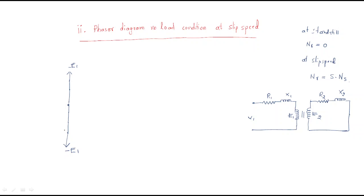We take E2 with a smaller magnitude. In phasor diagrams, the generated EMF and flux always have a 90-degree phase relationship. The flux direction is shown, and the magnetizing current Imu is always in phase with the flux. The core loss component Ic is also generated. The combination of Ic and Imu gives the no-load current I₀. From E2, a lagging current φ2 is produced in the rotor.